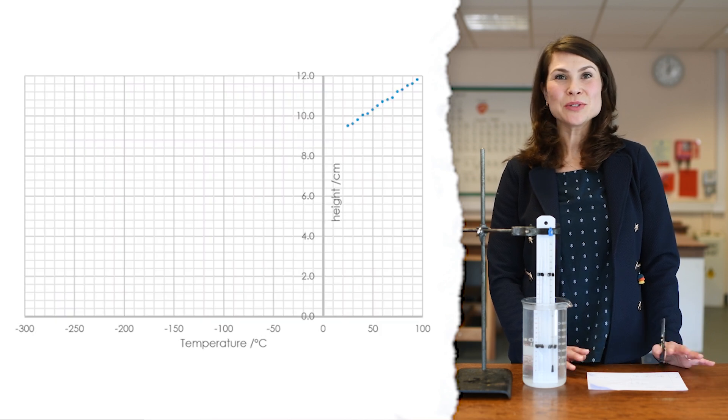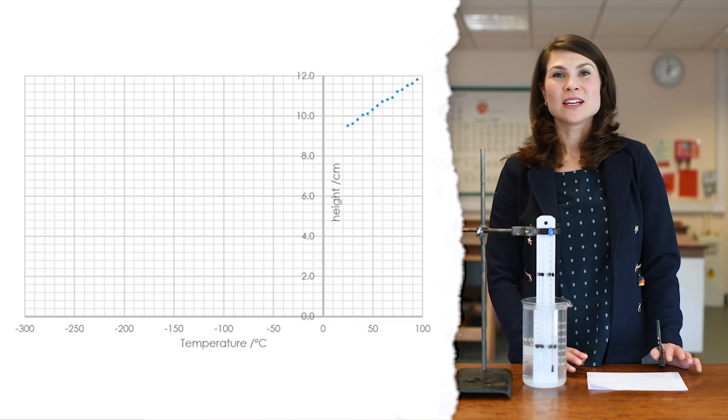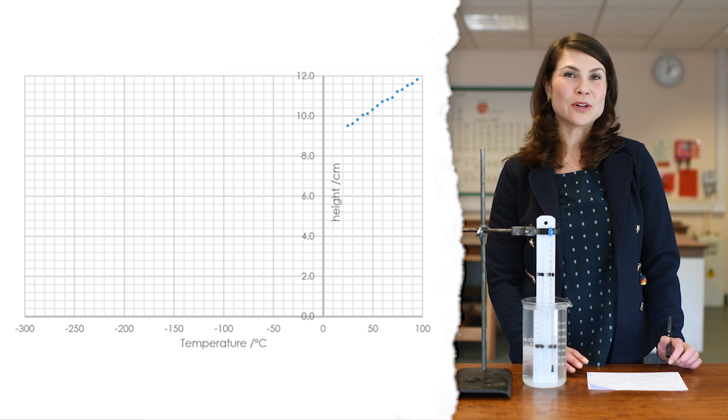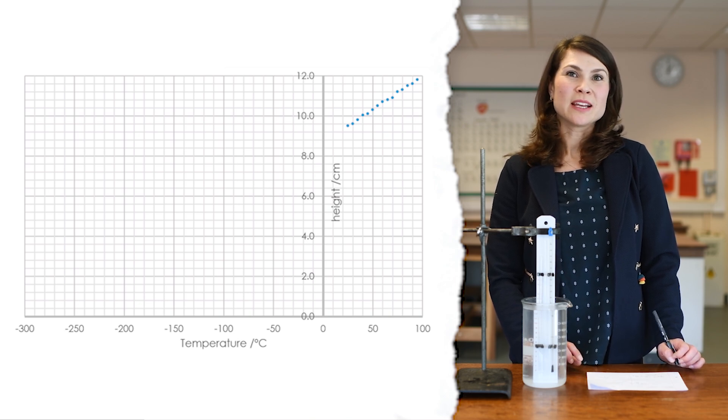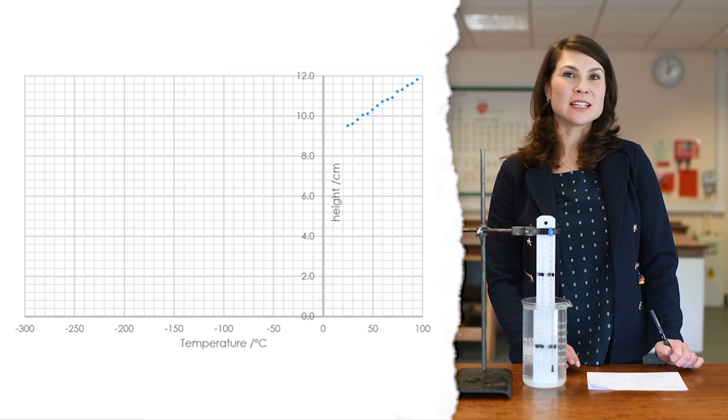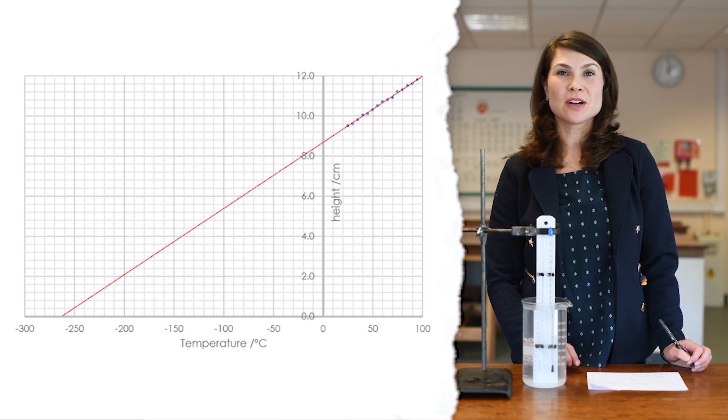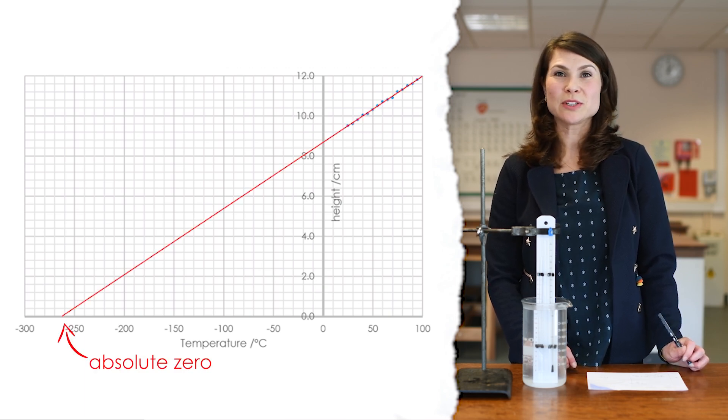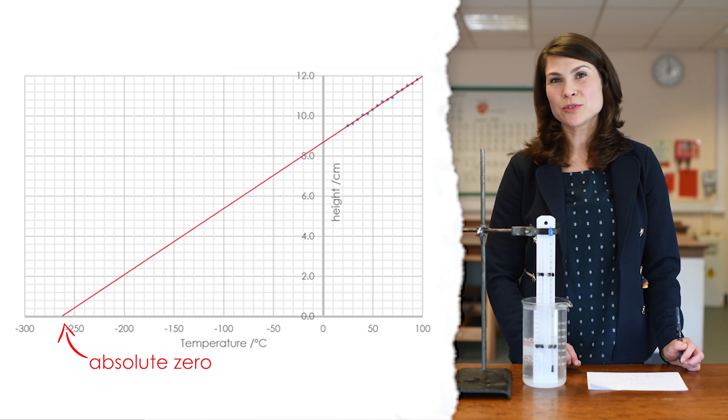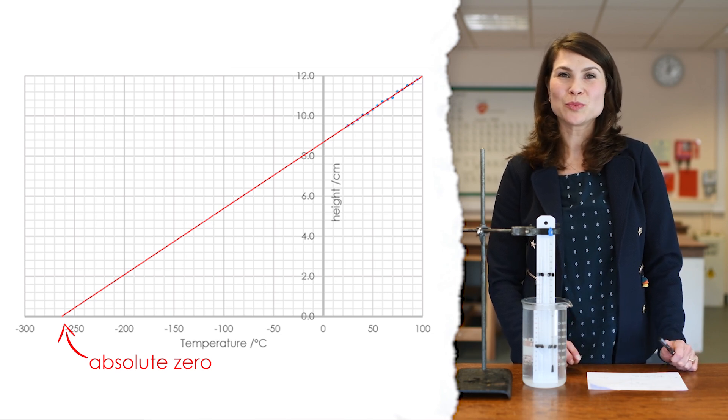We can plot the graph and there's two ways that we can use this to find a value for absolute zero, which is where the volume of the gas would theoretically get to zero. You can either draw the graph by hand and extrapolate the graph to get your value for absolute zero. However, this is not a particularly accurate way of doing it and so you can also do it algebraically.